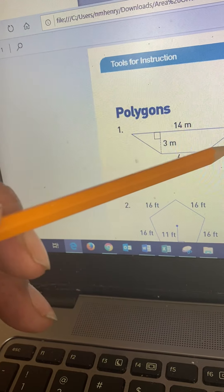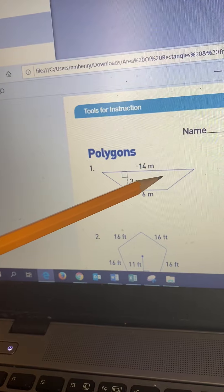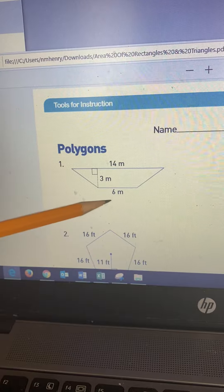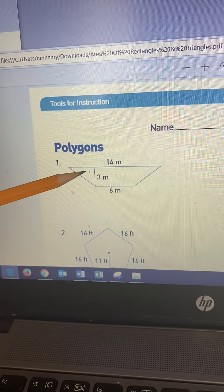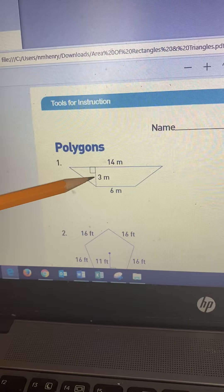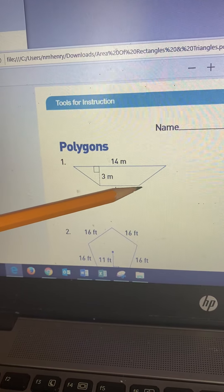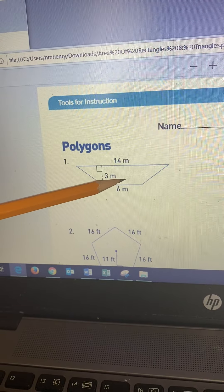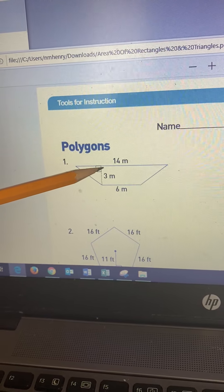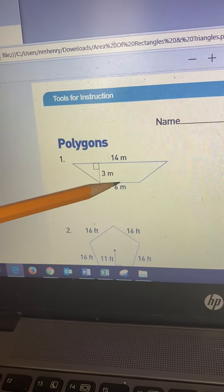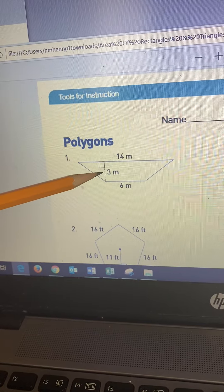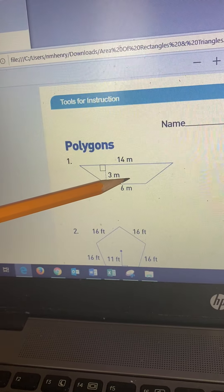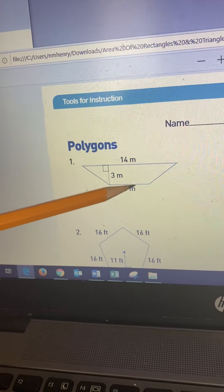But instead of using that formula, which we'll talk more about when we get back to school, we're going to decompose this into a triangle here and draw a line the same place this line is here. Just imagine if there was a line coming down right here. That means you would have a triangle here, a triangle here, and you would have a rectangle here in the middle. Now we're going to decompose this by adding up the area of this triangle, then this triangle, and then this rectangle.